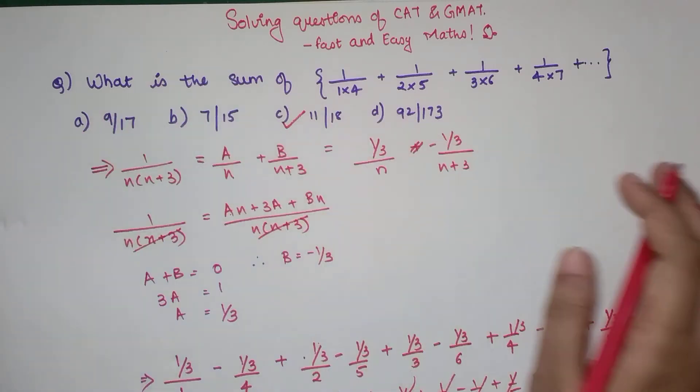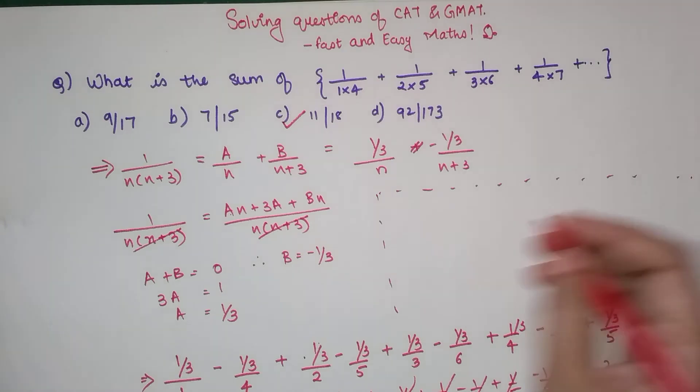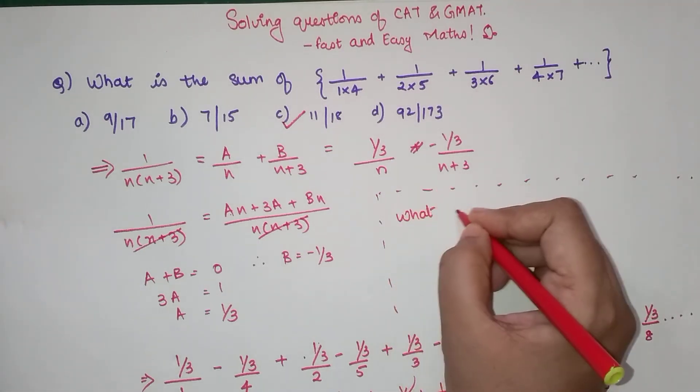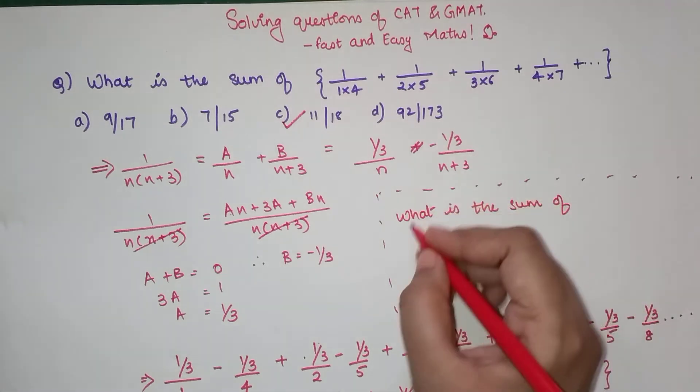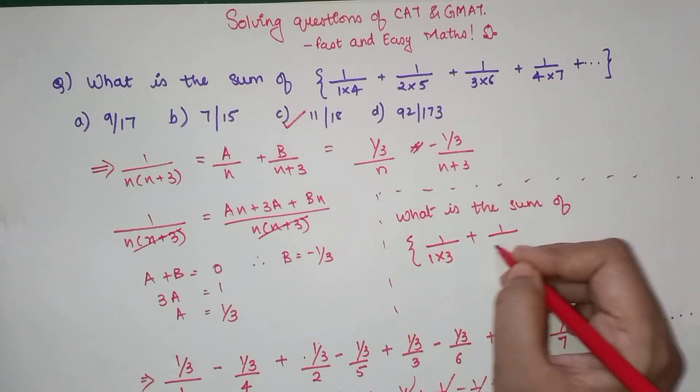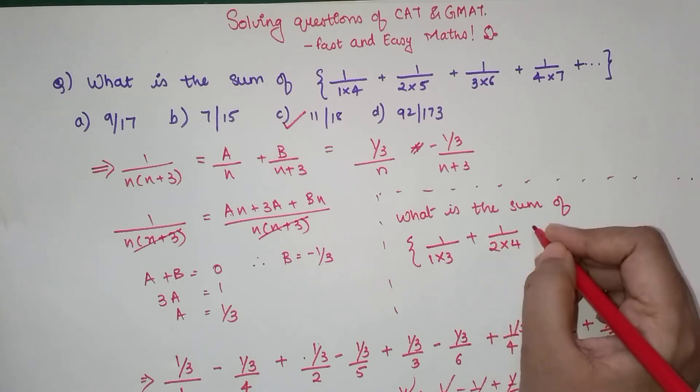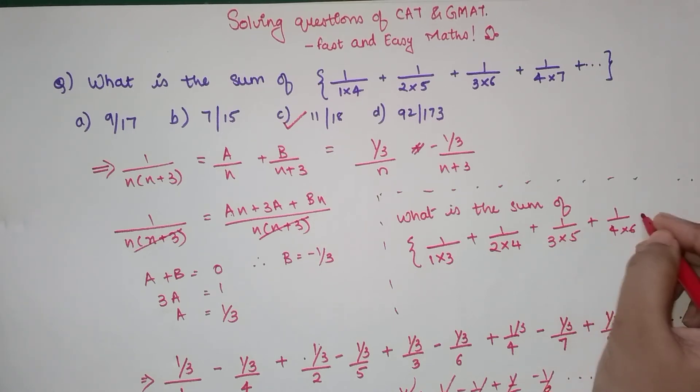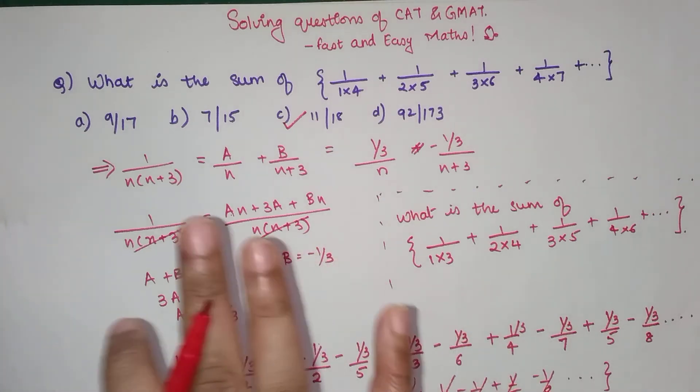So now coming to the question: What is the sum of 1 upon 1 into 3 plus 1 upon 2 into 4 plus 1 upon 3 into 5 plus 1 upon 4 into 6, and so on and so forth? Students, before signing off, I want to tell you all a tip.